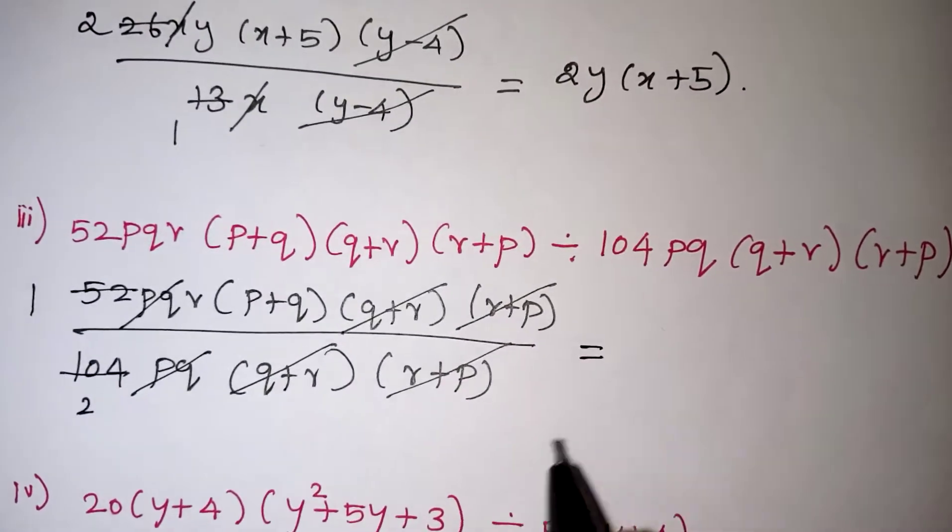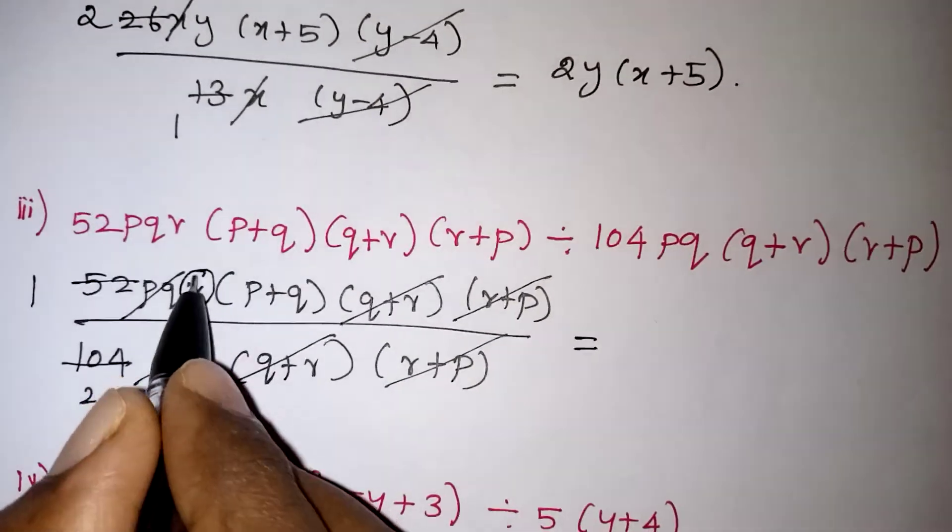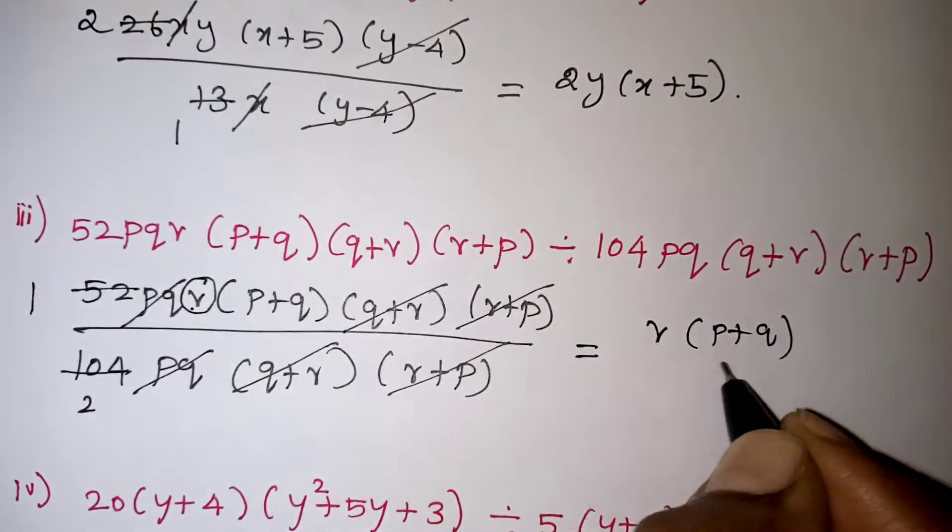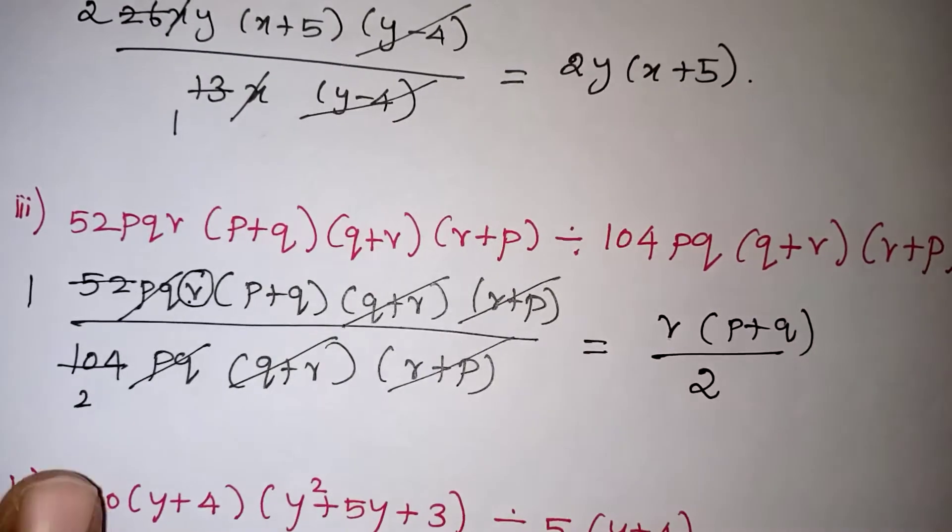Now the remaining values in the numerator we have r and (p + q), so r(p + q) divided by 2, that is your final answer.